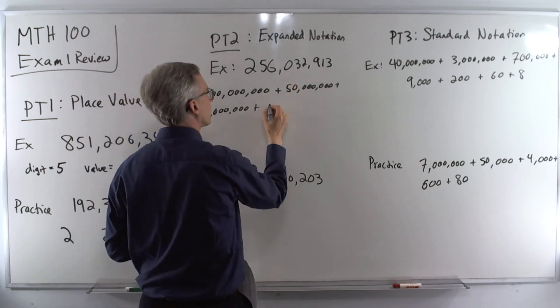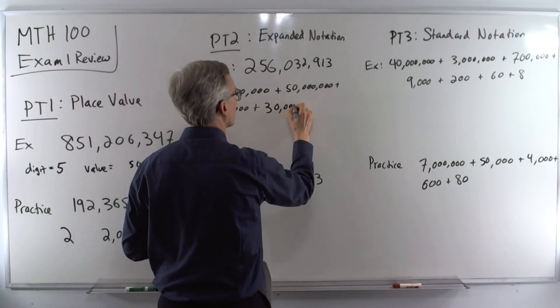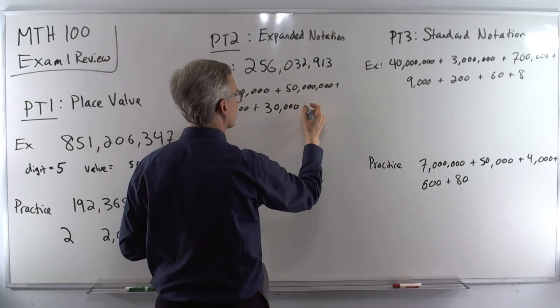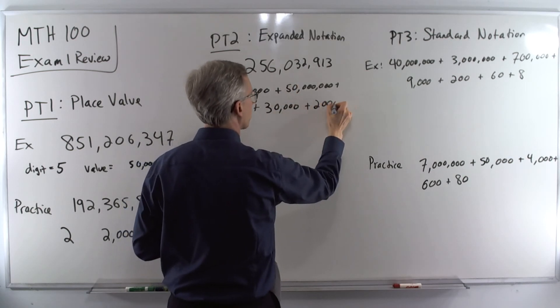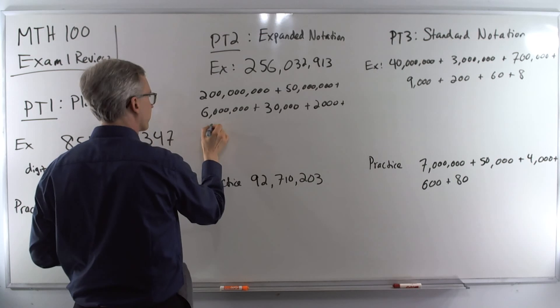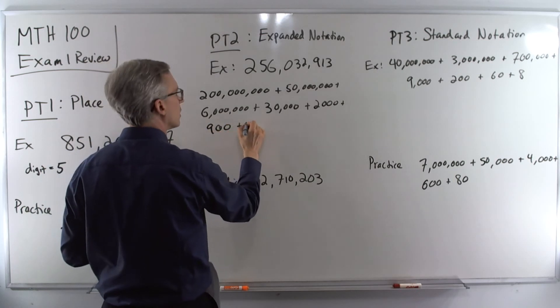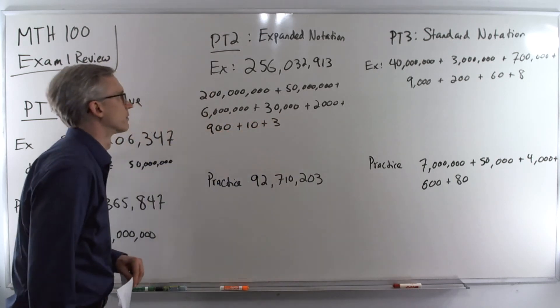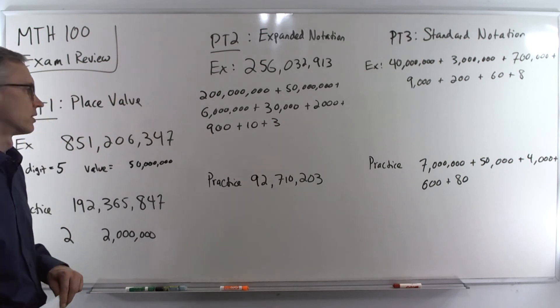Five and all zeros. Six and all zeros. Skip the zero. Go to 3. That's thirty thousand. We've got two thousand for the 2. Nine hundred for the 9. Ten for the 1. And finally a 3. So there's expanded notation.